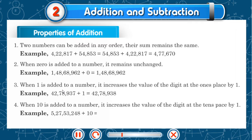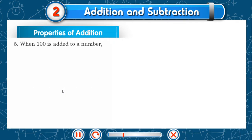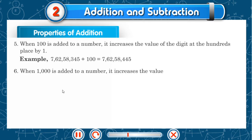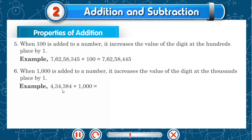Example: 5,27,53,248 plus 10 is equal to 5,27,53,258. When 100 is added to a number, it increases the value of the digit at the hundreds place by 1. Example: 7 crores 62 lakhs 58,345 plus 100 is equal to 7 crores 62 lakhs 58,445. When 1,000 is added to a number, it increases the value of the digit at the thousands place by 1. Example: 4,34,384 plus 1,000 is equal to 4,35,384.